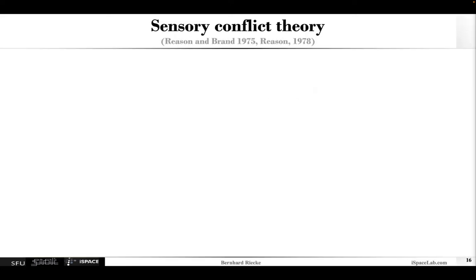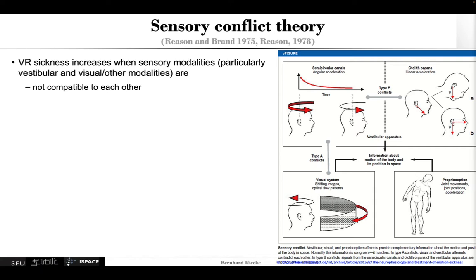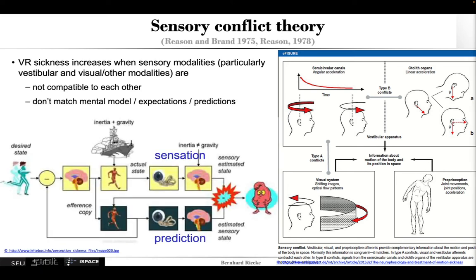One of the most well-known motion sickness-related theories is the sensory conflict theory. Basically, the idea is that virtual reality sickness occurs and increases if you have a conflict between different sensory modalities — in particular the vestibular system that often tells you you're not moving because you're sitting or standing stationary, and the visual or other cues that tell you you're moving. Virtual reality sickness increases if the different sensory modalities don't match the mental model, the expectations, or the predictions.